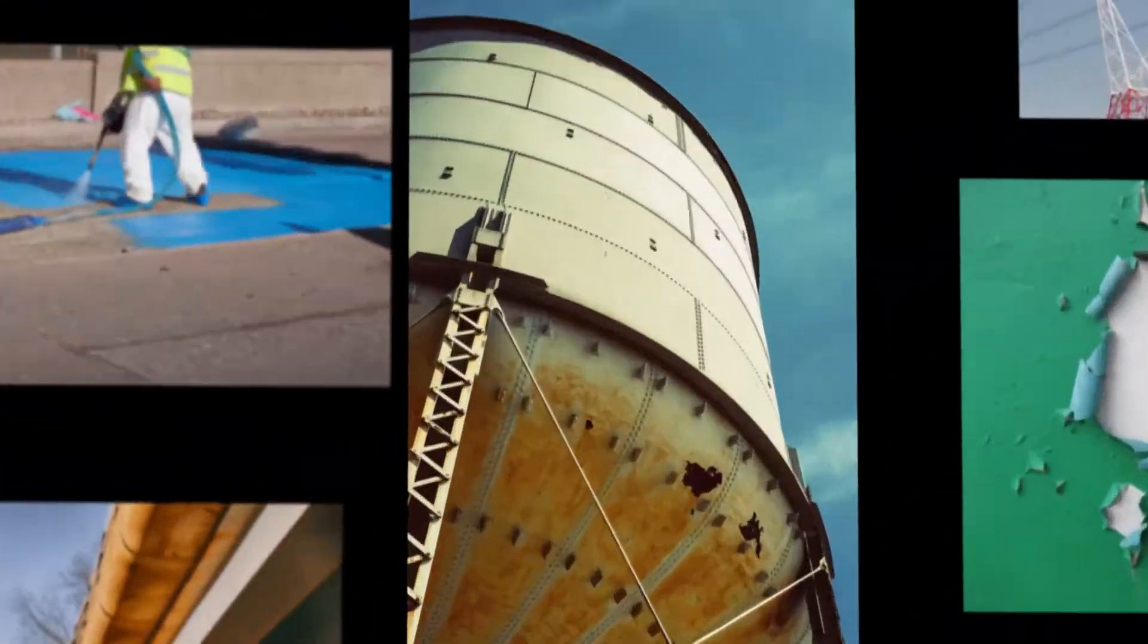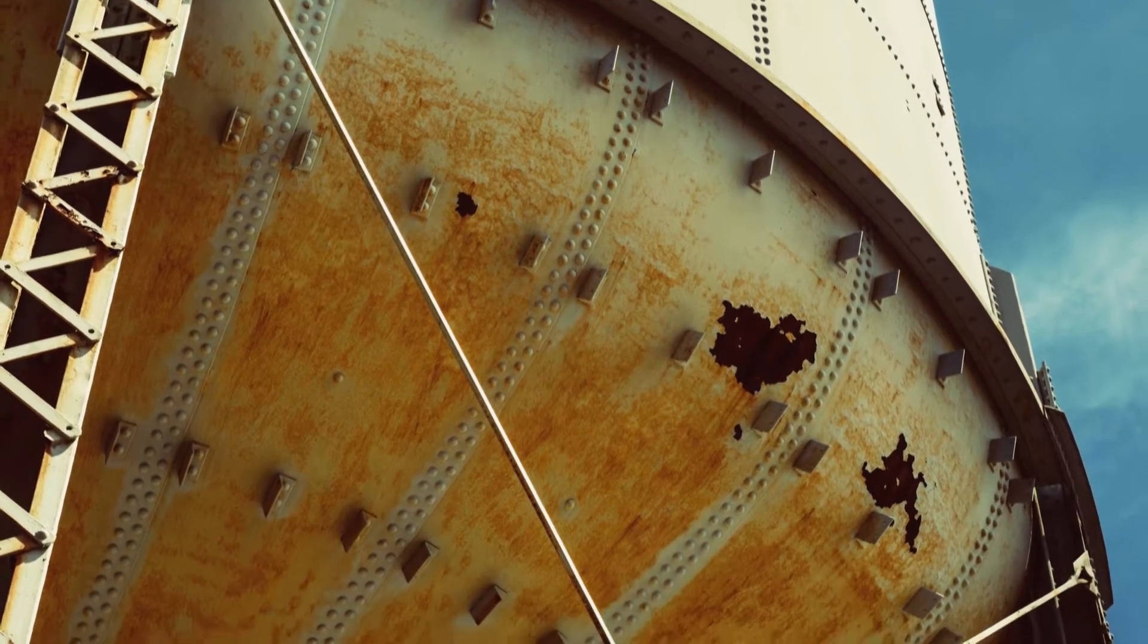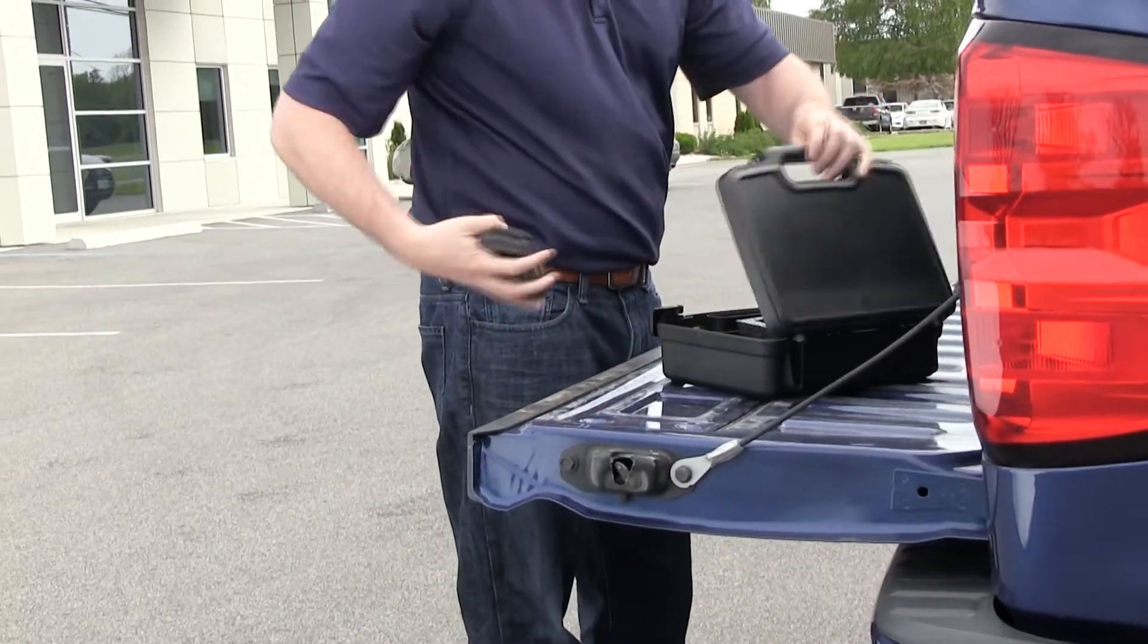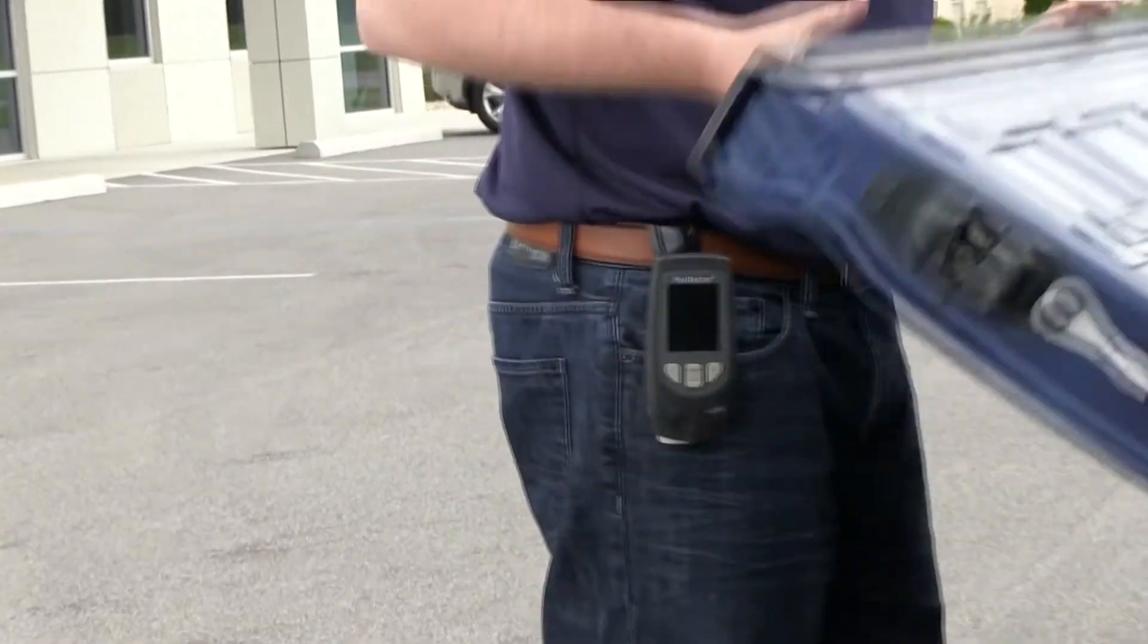A coating that is too thick can crack, may not have correct color or gloss, or may just be a waste of paint. A reliable coating thickness gauge is therefore one of the most important instruments in an inspector's toolkit.